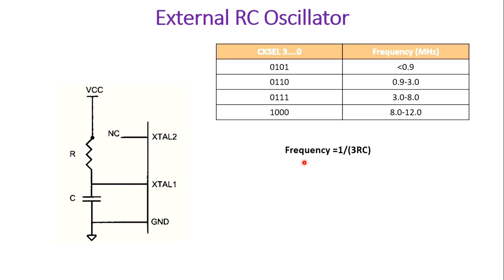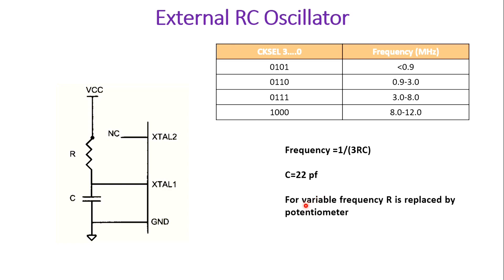The calculation for frequency is f = 1 / (3 × R × C). By defining R and C and substituting the values into this formula, it gives the frequency at which our microcontroller will work. Here C is equal to, for example, 22 pF. If you use a variable resistor (potentiometer) for R, you will have a variable frequency on the XTAL1 pin on which the microcontroller can operate.